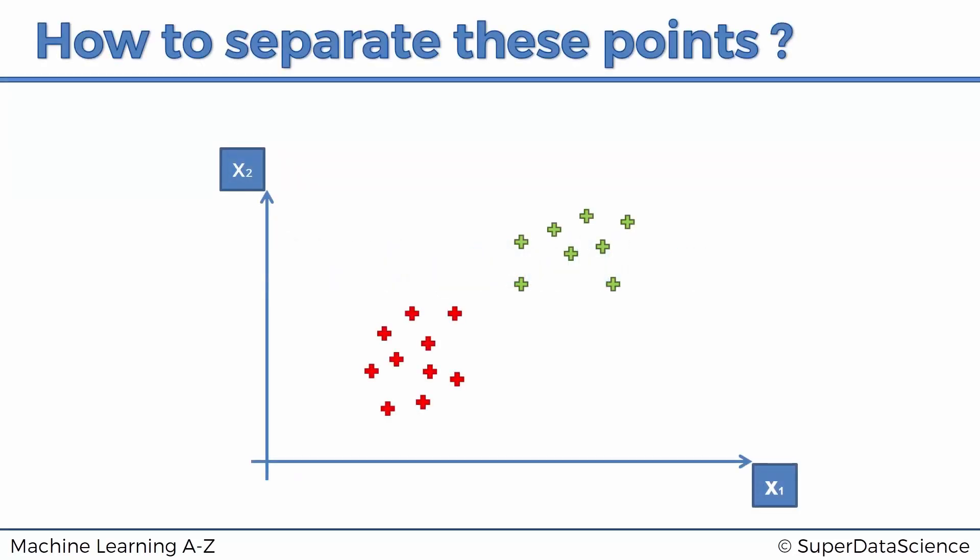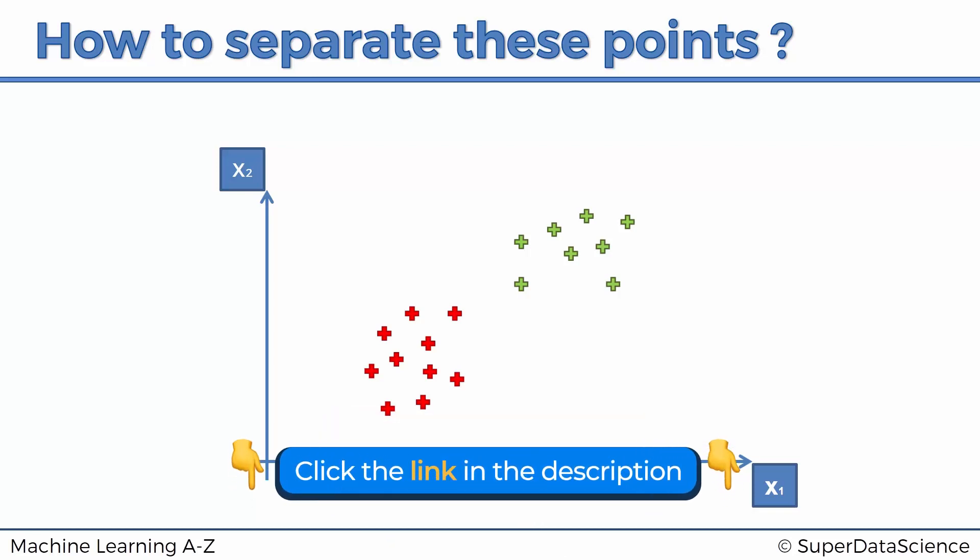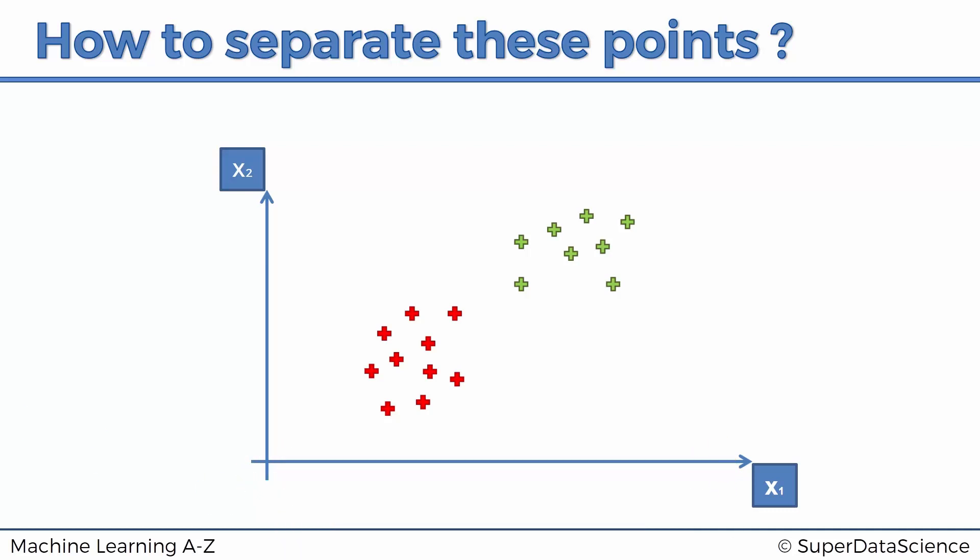Here we've got points on a two-dimensional space. For simplicity's sake, we've got just two columns, x1 and x2, and we've got some observations. Some are red, some are green, so we've already classified them. But how do we derive a line that's going to separate them? That decision boundary is going to be very important for us going forward when we start adding new points.